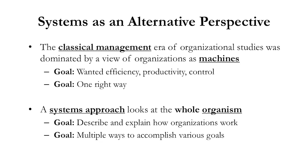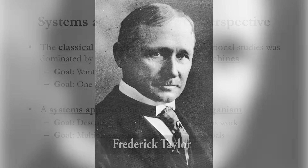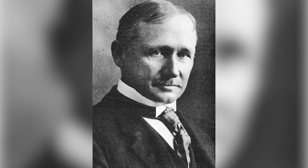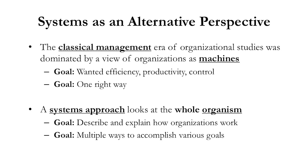It's most helpful to see systems as an alternative perspective at the time. The classical management era of organizational studies was really the dominant view — it saw organizations as machines, and that was the main way to view life in organizations for many decades. The goal of that classical management school of thought was efficiency, productivity, and control. They were looking for the one best way, as Frederick Taylor said, to do every single task in the organization. So when systems theory came along, it was really a whole other way to view life at work.